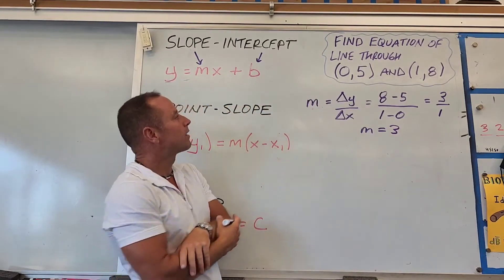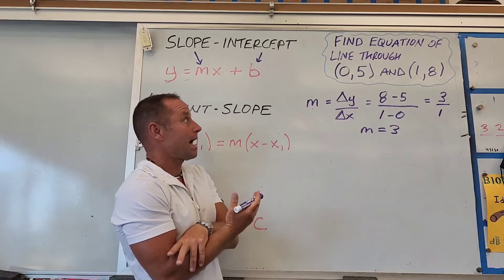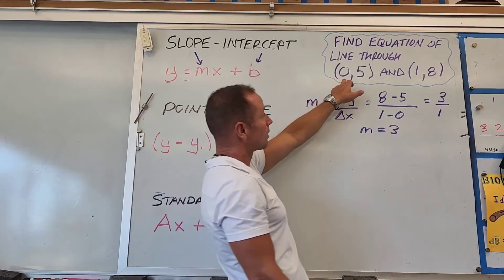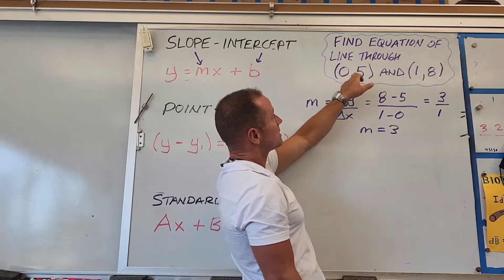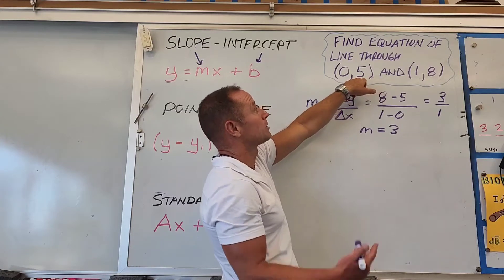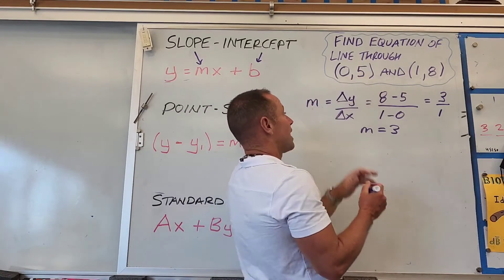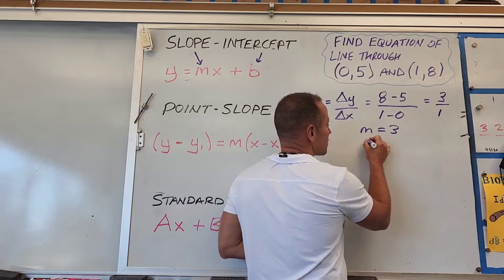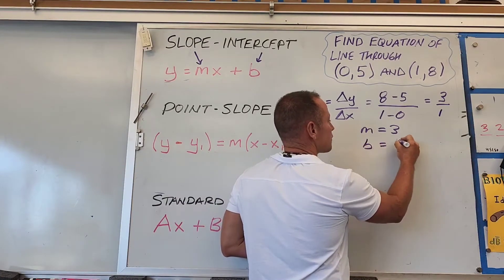The y-intercept is where it crosses the y-axis, where x equals 0. We're given that point, so the y-intercept is y equals 5 when x equals 0, so b equals 5.